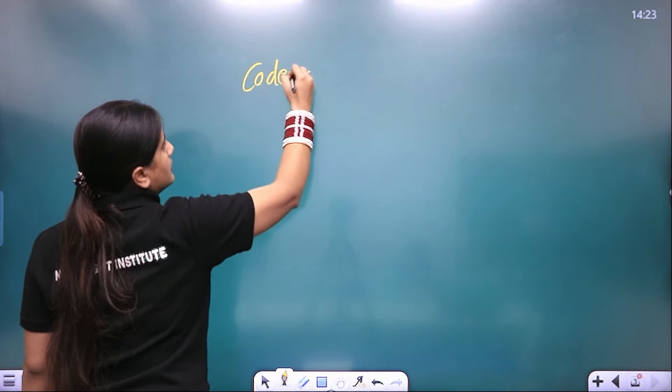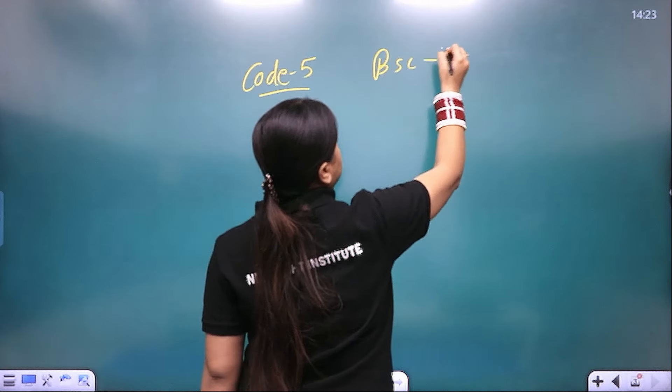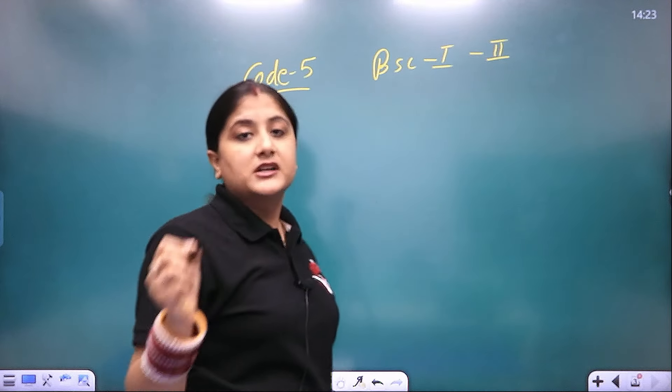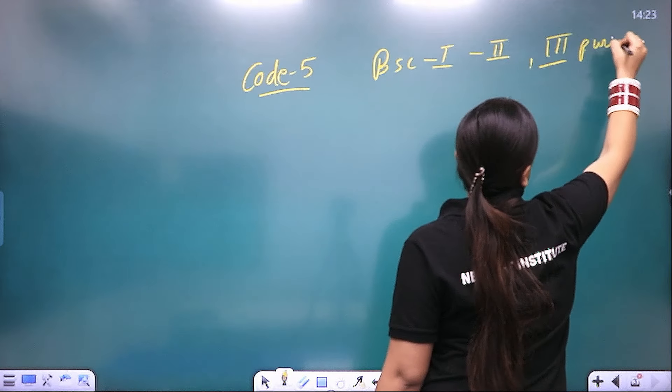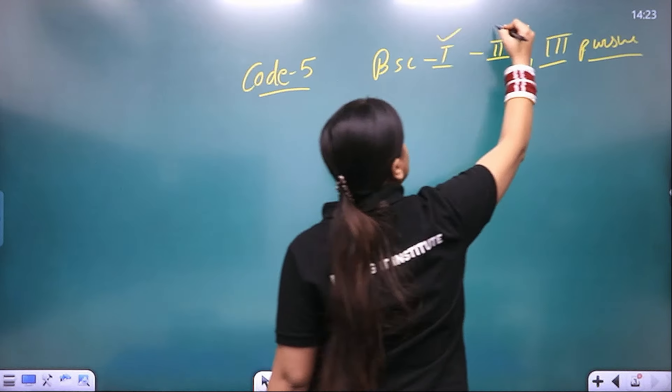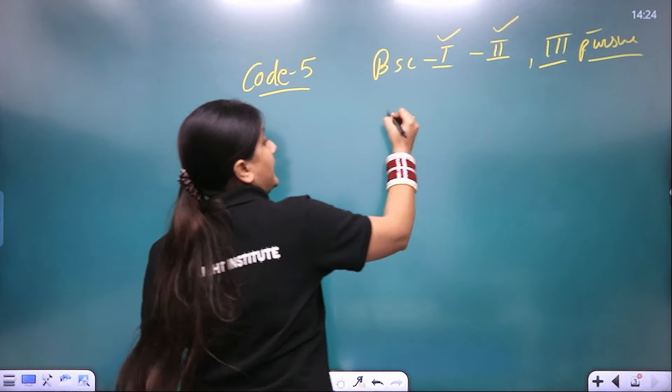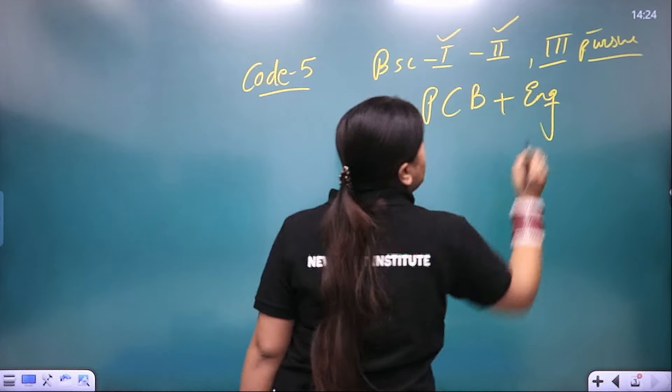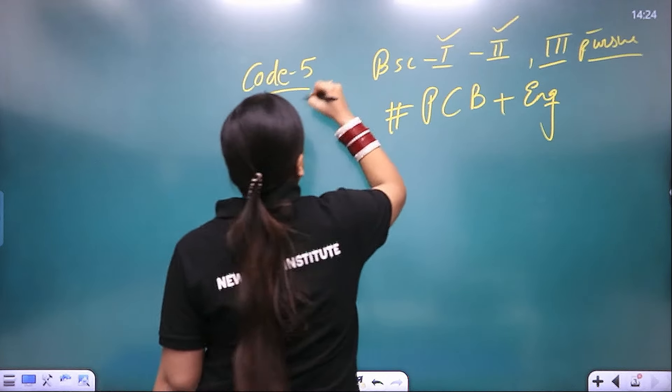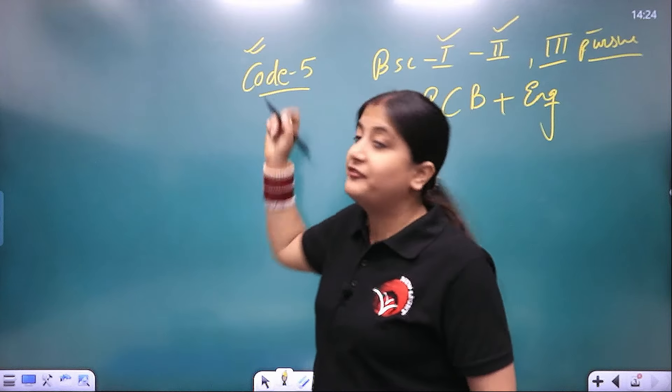Now let's talk about code 5. Code 5 students. Code 5. If you have BSC 1st or 2nd year, if you have completed or pursue, or 3rd year if you are pursuing, and let me tell you one thing very carefully that you should have any two of PCB plus English, then you will use code 5. If you have BSC in 1st or 2nd year or 3rd year, then you will use code 5 in simple words.